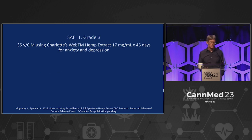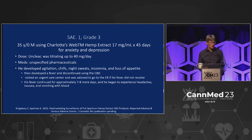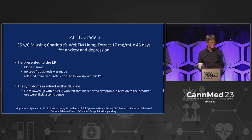SAE one: 35-year-old using Charlotte's Web hemp extract, about 17 milligrams per mL for about 45 days for anxiety and depression. The dose was unclear — she was titrating up to 40 milligrams a day. Unspecified pharmaceuticals were also on board. This person developed agitation, chills, night sweats, insomnia, and loss of appetite, then developed a fever, stopped the CBD, went to urgent care and was advised to go to the ER. The fever continued for approximately seven to eight more days. They experienced headaches, nausea, and vomiting with blood. Presented to the ER — blood and urine — no specific diagnosis was made, released home. Symptoms resolved within 10 days. Whether they stopped the CBD, we don't know. It sounds like the stomach flu.